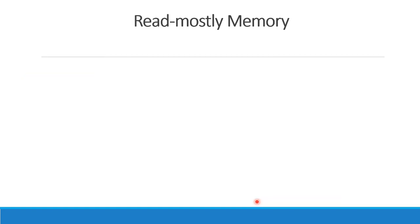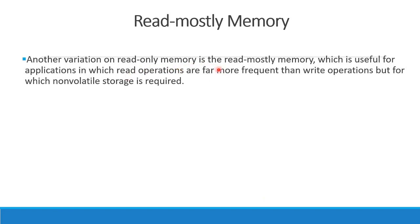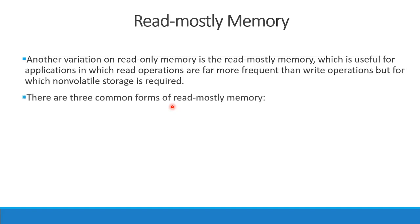Next is read-mostly memory. Read-mostly memory is read or write, but we are mostly reading. Another variation on read-only memory is the read-mostly memory, which is useful for applications in which read operations are far more frequent than write operations, but for which non-volatile storage is required. There are three common forms of read-mostly memory: EPROM, EEPROM, and Flash memory.